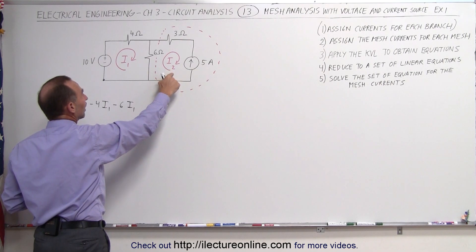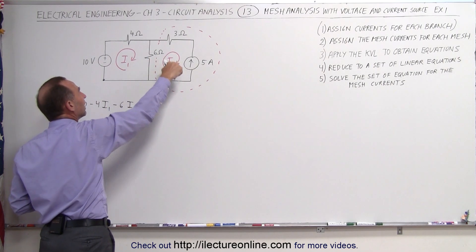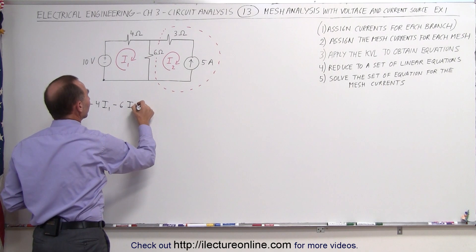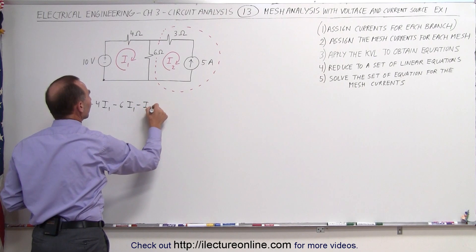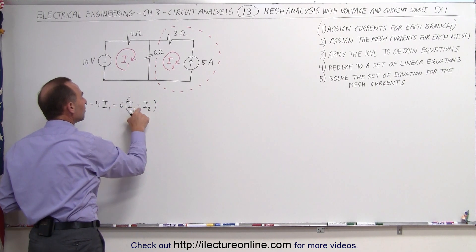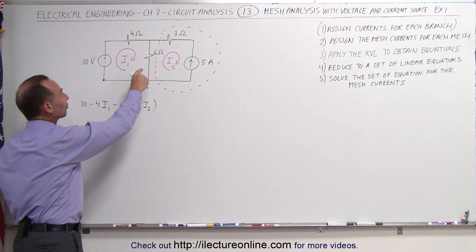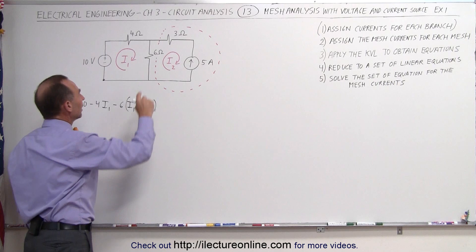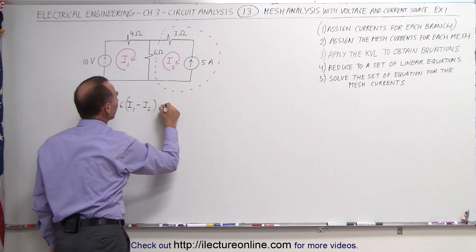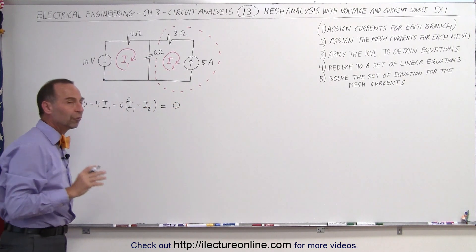But we have a voltage rise relative to I2. I2 is in the opposite direction here, so we have to subtract minus I2 from that. Therefore, minus 6 times minus I2 gives us a plus 6 volt rise across the 6 ohm resistor relative to I2. Now that we're all the way around the loop, this is equal to zero. There's our first equation.